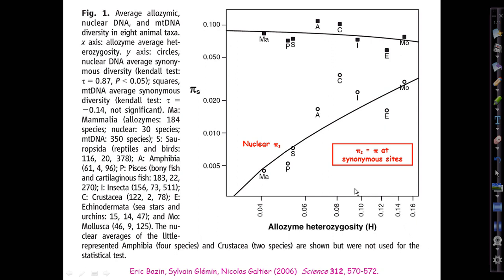One place to start is with a key figure from a great paper published about 14 years ago in Science by a group of French researchers — Bazin, Glamin, and Gaultier. They mined the databases to produce a graph showing a really fascinating pattern: large higher taxa — actually classes of animals: MA for Mammalia, P for Pisces (fishes), S for Sauropsida (reptiles and birds), A for Amphibia, C for Crustacea, I for Insects, E for Echinoderms, and MO for Mollusks.